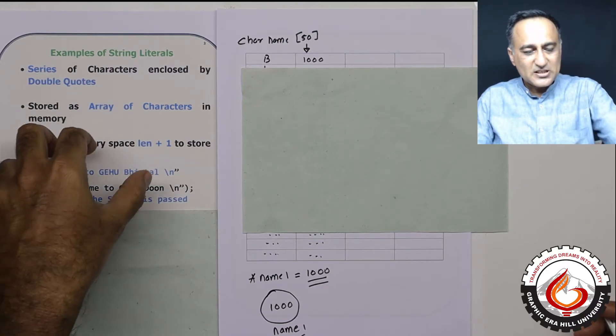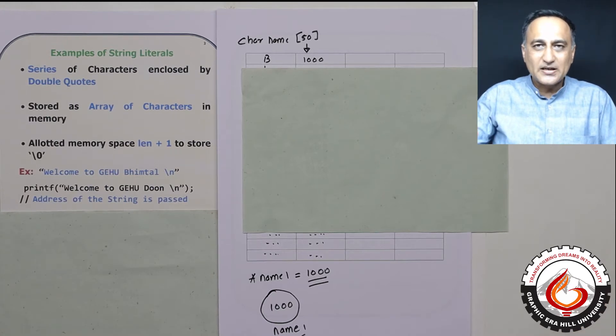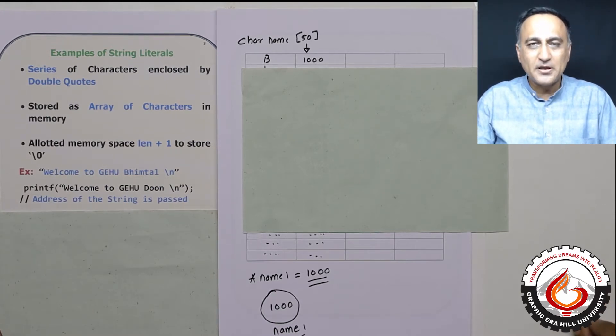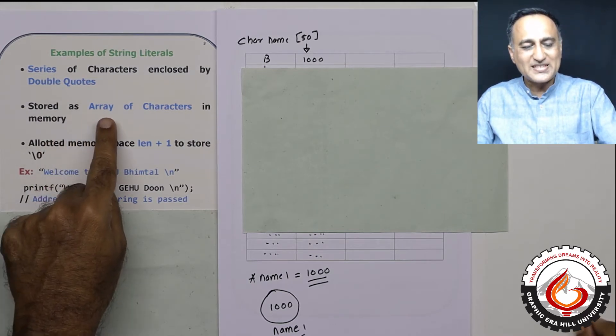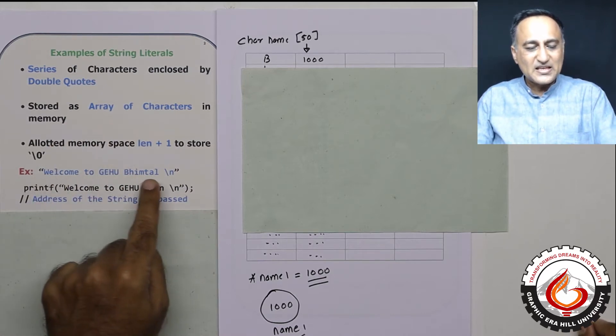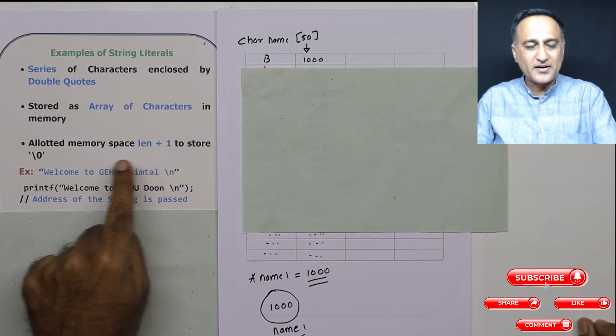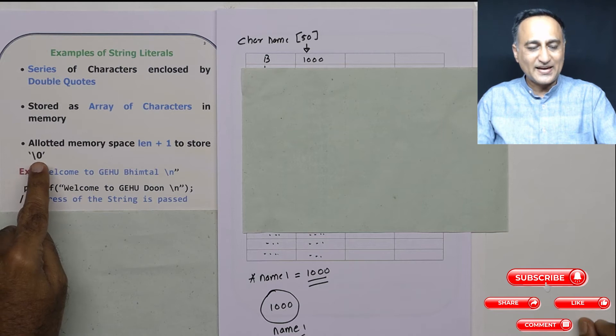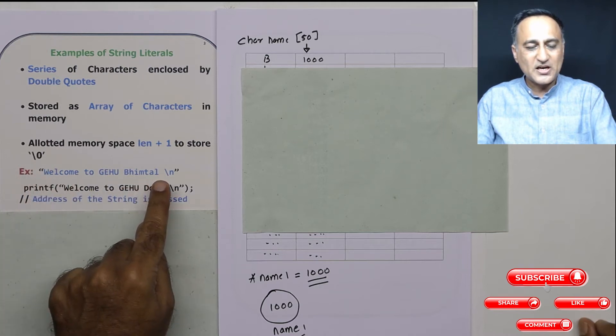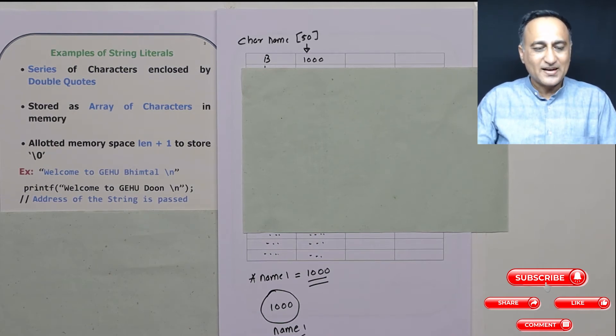What you need to understand is this particular "welcome to gehu Bhimtal" also needs space or is going to be allocated space in the main memory. It is simply stored as a sequence or an array of characters in memory. This is the number of characters, but there is always one space extra allocated so that you can terminate it with the null character. Whatever is this message, after the backslash n there is going to be one extra space allocated so that you can end up inserting the null character.